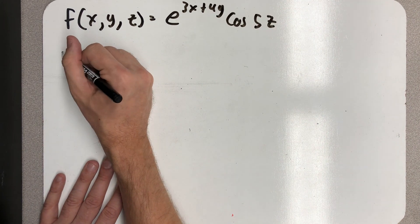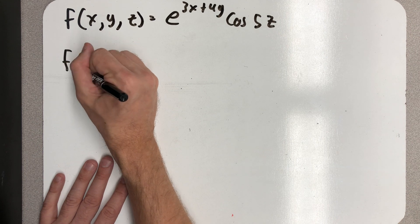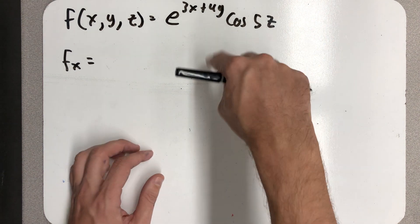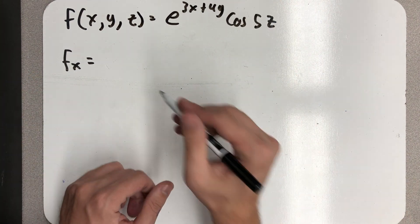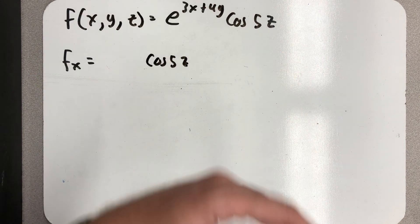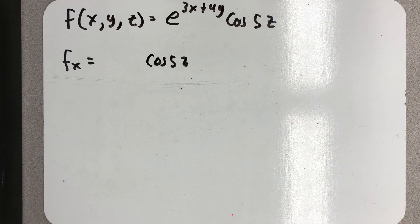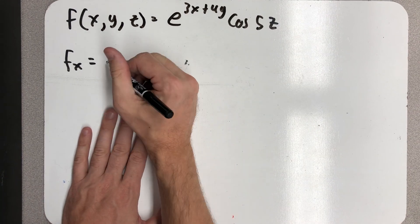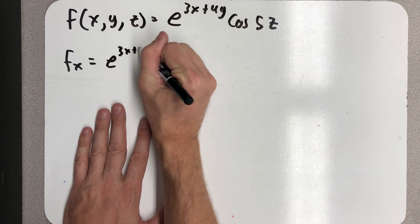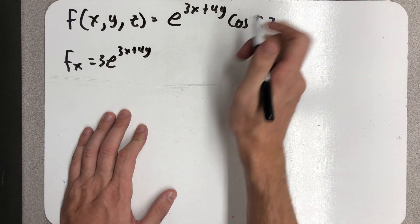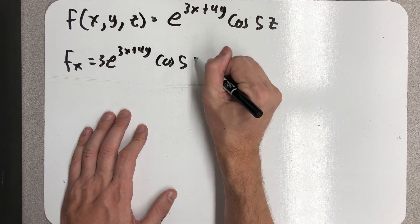So first up, let's take a partial with respect to x. I'm gonna treat every other variable like it's a constant, so this cosine of 5z hanging out there is just a constant. It's just going to appear in my final answer, like taking the derivative of three times e to the something. I need to take the derivative of e^(3x+4y). Well, that's going to be e^(3x+4y) times the derivative of the inside, which is 3, still times that cosine of 5z.